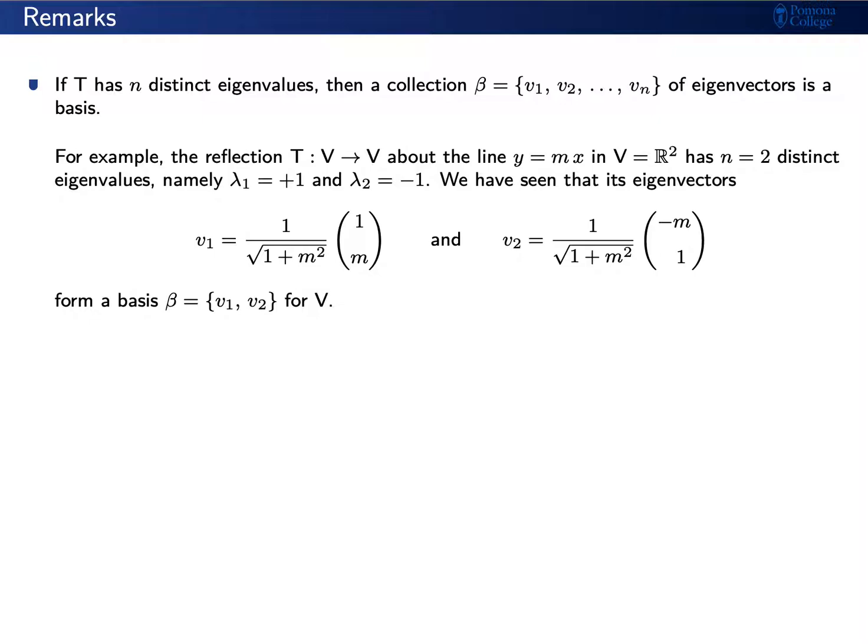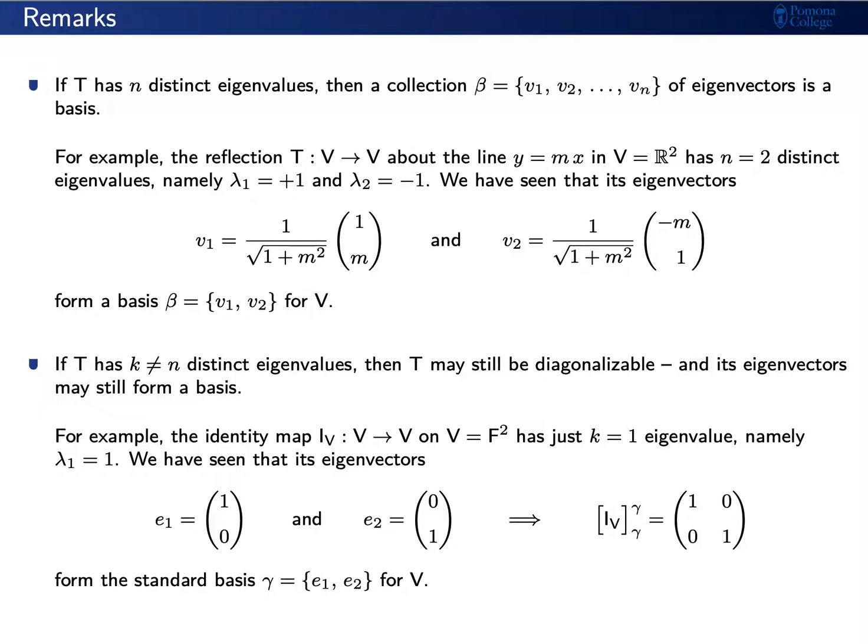However, if T has k distinct eigenvalues where k is strictly less than n, then T may still be diagonalizable and its eigenvectors may still form a basis. For example, consider the identity map i sub V that takes a vector v to itself. We found before that this has just k equals one eigenvalue, namely lambda equals one. However, we still found two eigenvectors, namely the standard basis vectors e sub 1 and e sub 2. Hence, this linear transformation i sub V is diagonalizable.